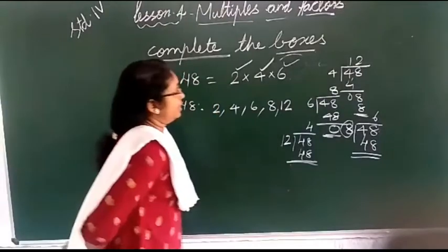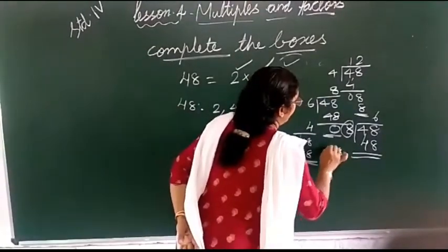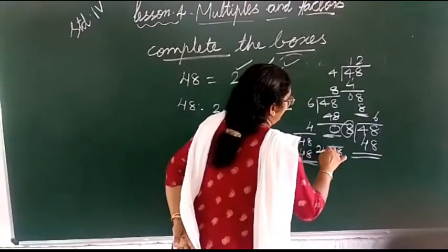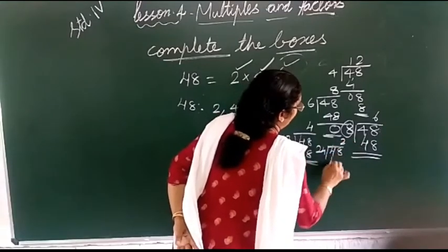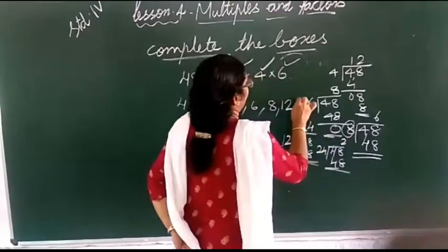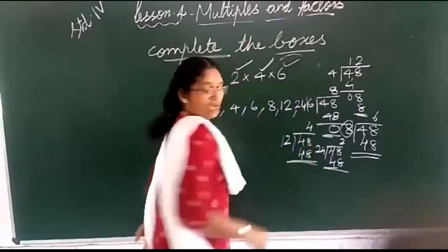Next here is number 24. 48 divided by 24. 24. 2 into 24 is equal to 48. 48, that's right.